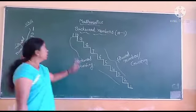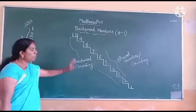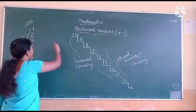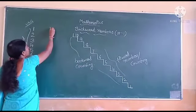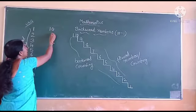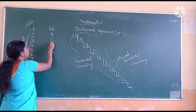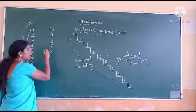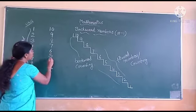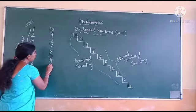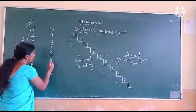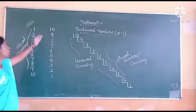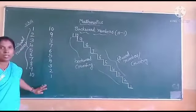Shall we write the backward numbers? 10, 9, 8, 7, 6, 5, 4, 3, 2, 1. This is backward counting.